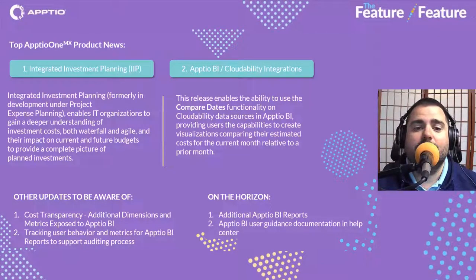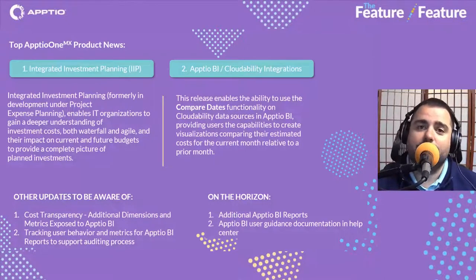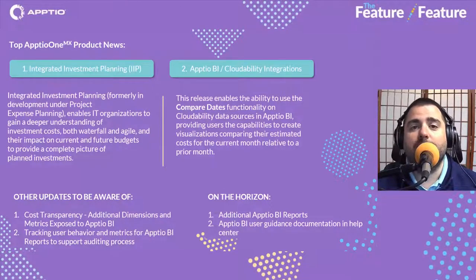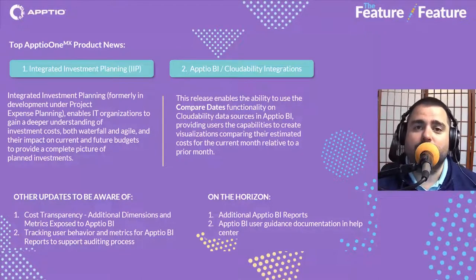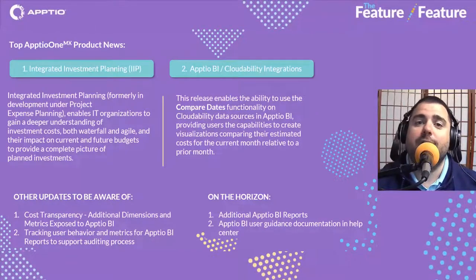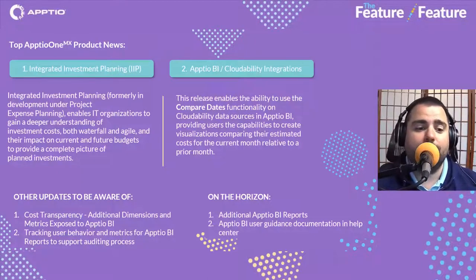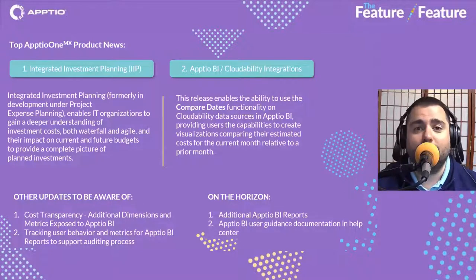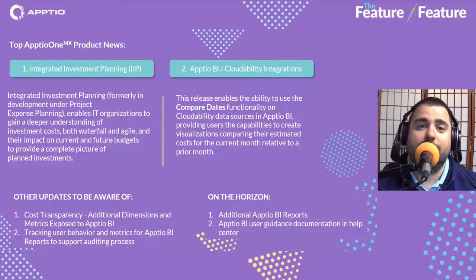We're adding the Use Compare Dates functionality for Cloudability data sources, making it a lot easier to compare data over certain points in time. Aptio BI is our solution that works across Aptio's products to enable customers to create custom dashboards and reports and easily distribute those to the people that need to see them in their organization. In Cost Transparency, we have additional dimensions and metrics exposed to Aptio BI so you can have that single pane of glass to customize and distribute how you're looking at that data.